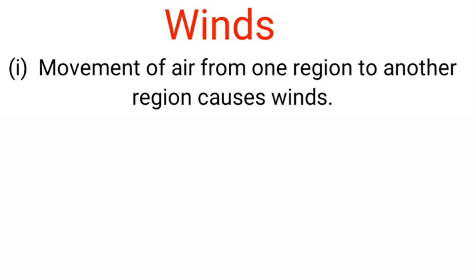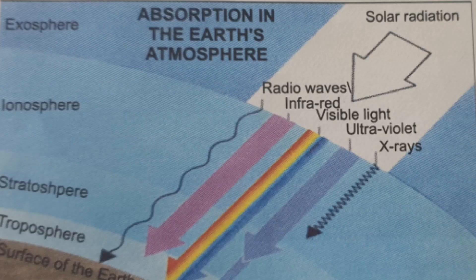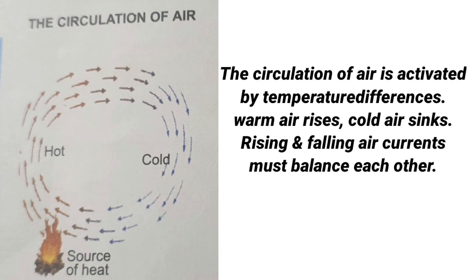Wind is the movement of air. Winds are the result of changes in our atmosphere due to heating of air and formation of water vapors. When solar radiations fall on the earth, the majority are reflected back by land and water bodies and some are absorbed. These reflected radiations heat the atmosphere from below, setting up convection currents in air. Since land gets heated faster than water, the air over land is heated faster than the air over water bodies.